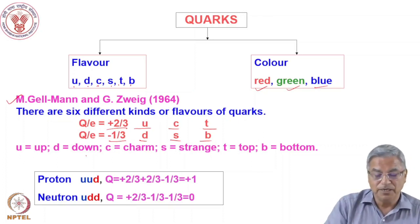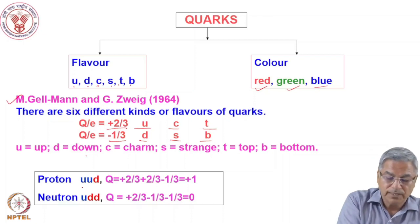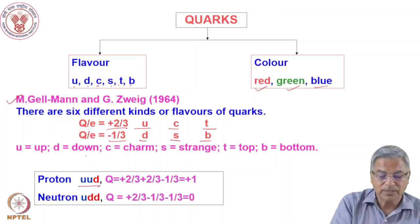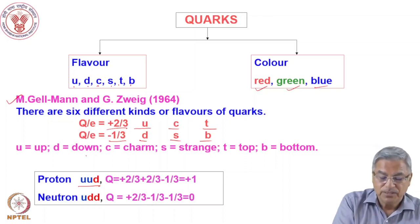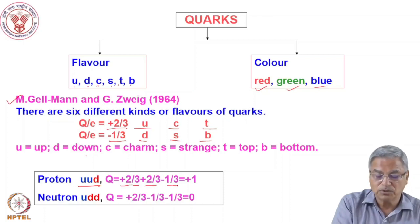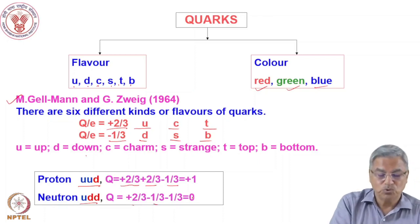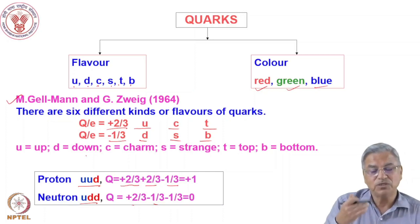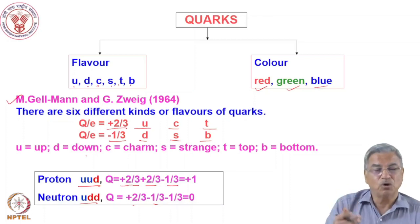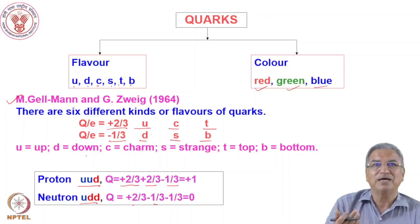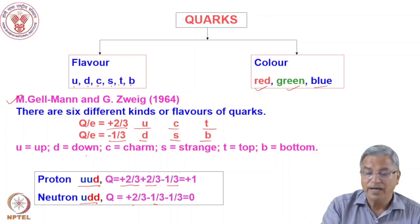Experimentally it was proven that a proton is made of UUD — two up quarks and one down quark. Up quark plus 2/3, plus up quark 2/3, minus down quark 1/3 gives a charge of plus 1 for the proton. The neutron is UDD — one up quark and two down quarks: plus 2/3 minus 1/3 minus 1/3 equals zero. So it could explain not only the charge but the spins and many other properties of the nucleons. Apart from proton and neutron, other particles — lambda, delta, sigma — are all baryons, and all of them could be explained in terms of quarks and have been discovered.